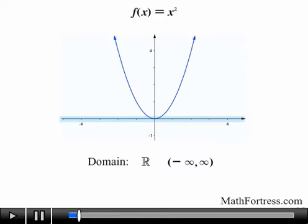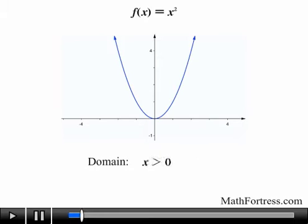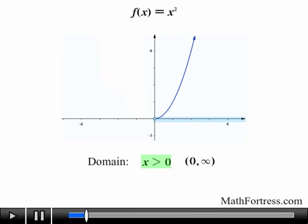This function has no inherent restrictions in its domain, but we are free to restrict the domain whenever necessary. For example, say I only want to turn on this function when values of x are greater than 0. Using inequalities, we express this restriction as x > 0, meaning the function is visible only where x is positive. Notice there is an open circle at x = 0.